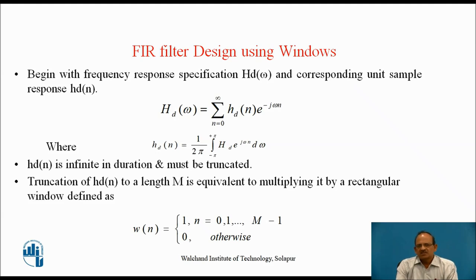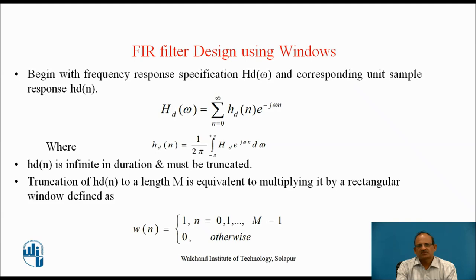When hd(n) is obtained, as we have seen previously, this hd(n) — that is the desired impulse response — is infinite in duration. And so, such a filter is not practically realizable. Therefore, we must truncate it to some finite duration.